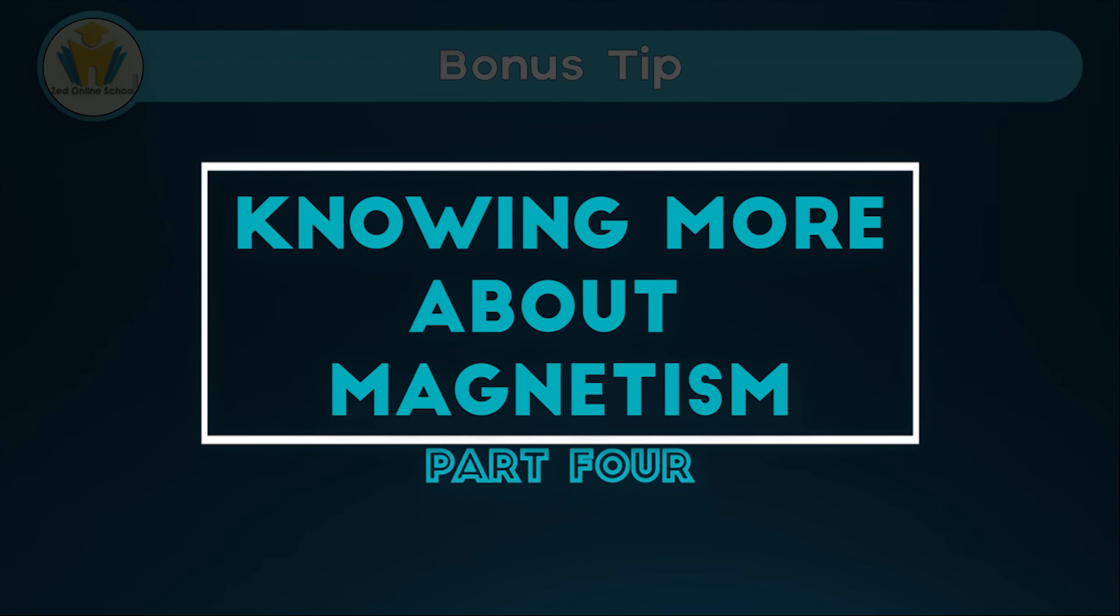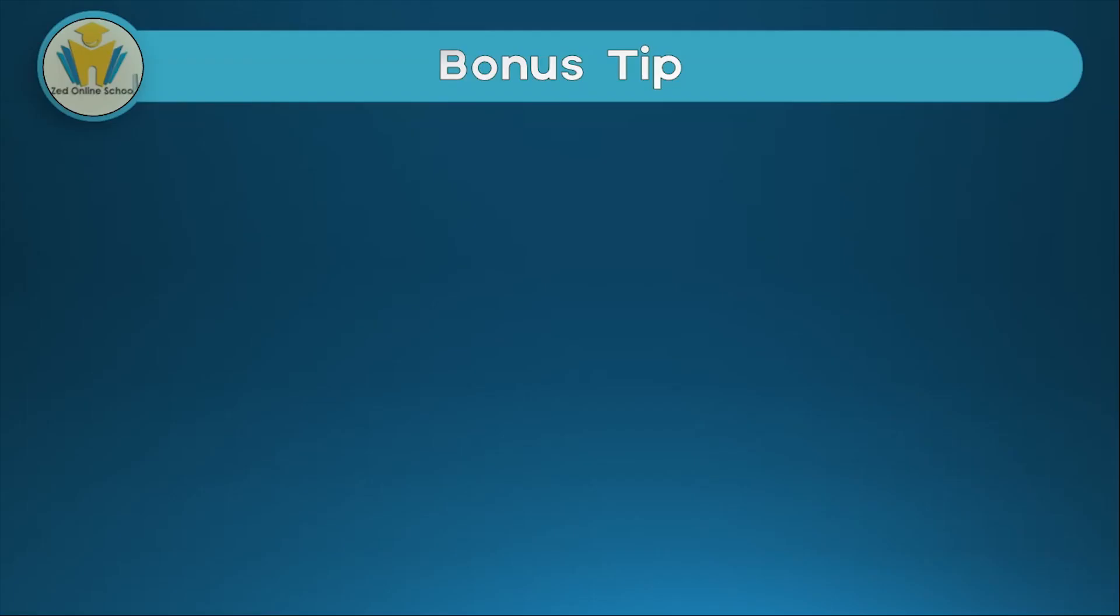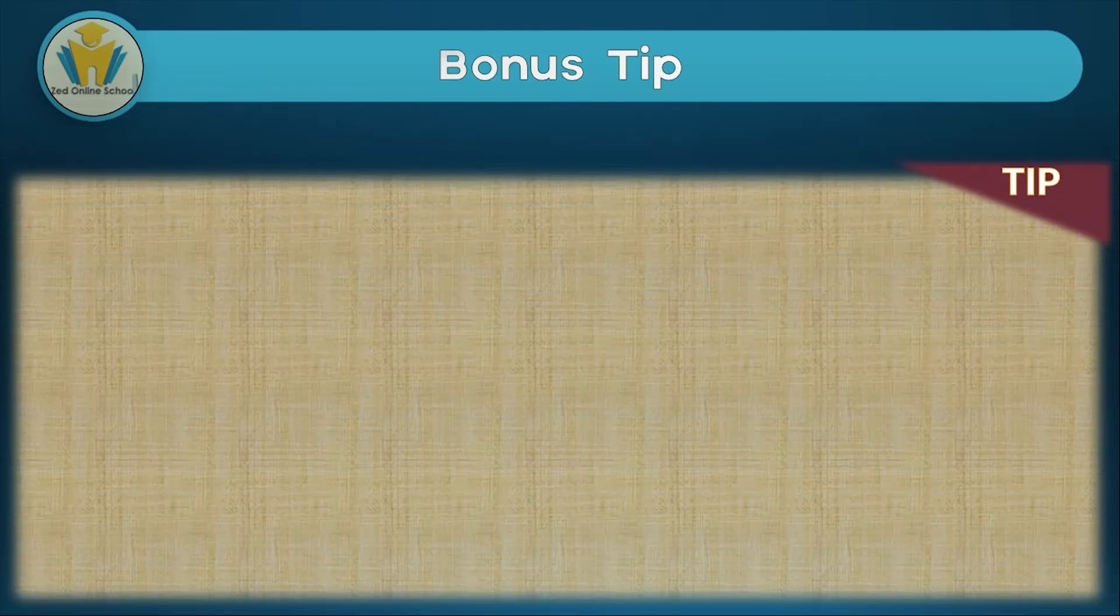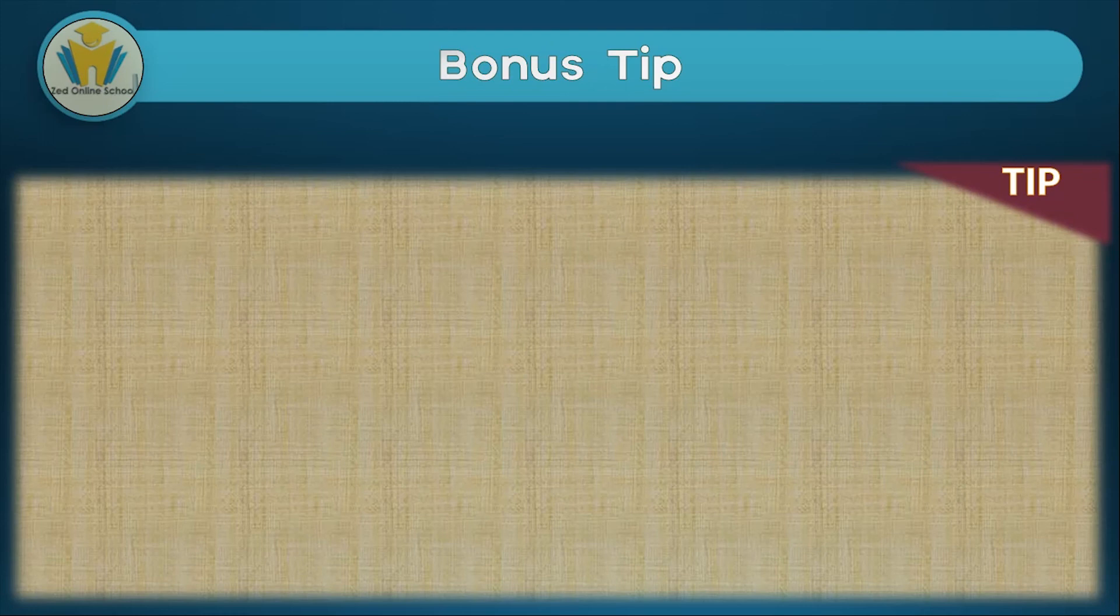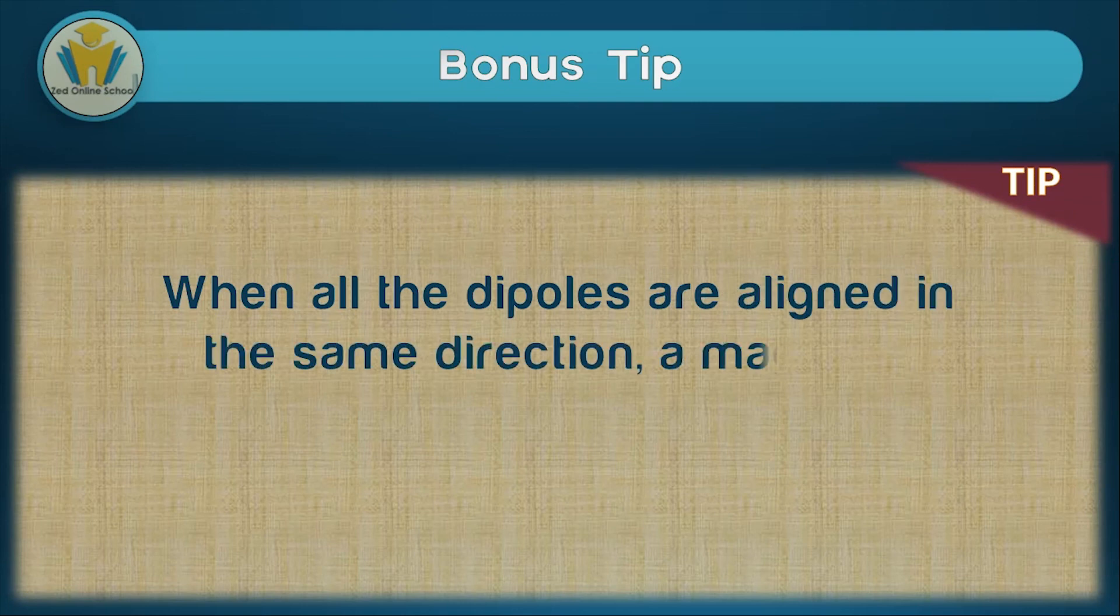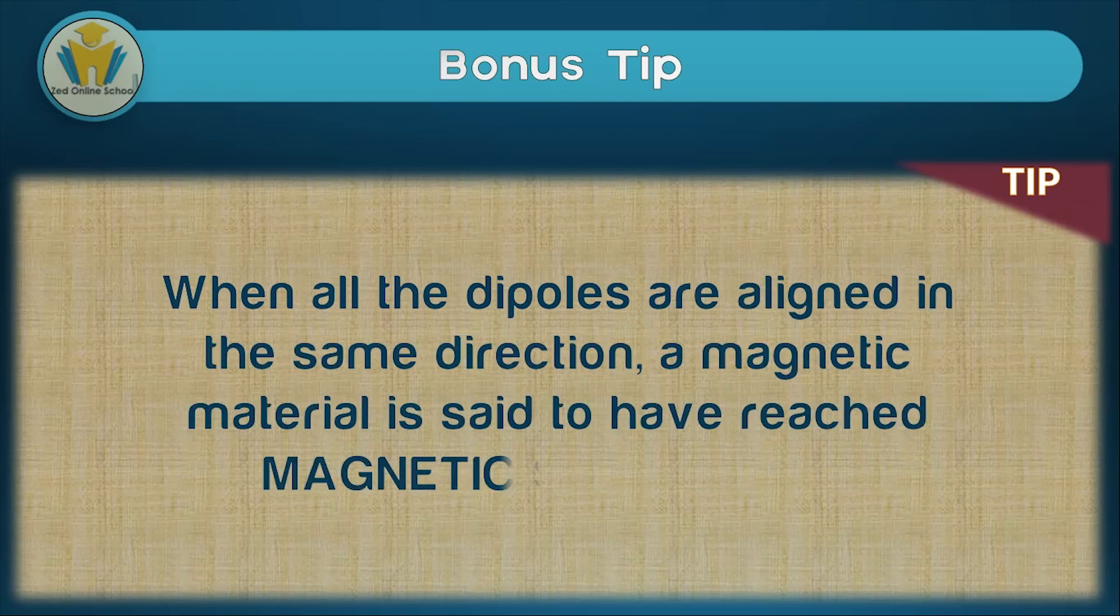What should you always remember when thinking about the domain theory or magnetism in general? When we manage to make all the dipoles in a particular magnetic material point in the same direction, there's a scientific term for this state. It's known as magnetic saturation. This is a point when all the dipoles are aligned in the same direction, and the magnetic material cannot undergo any further magnetization.